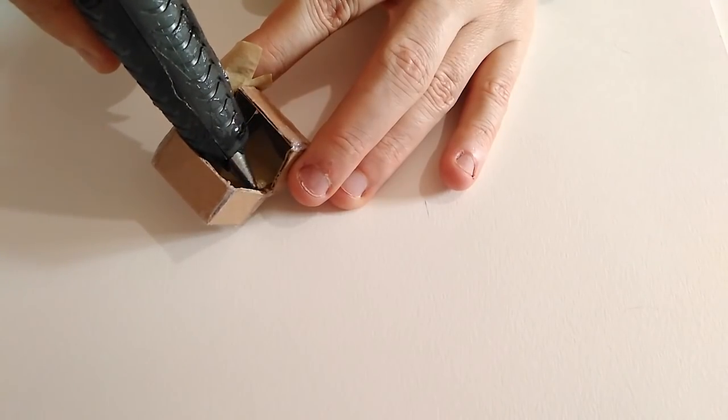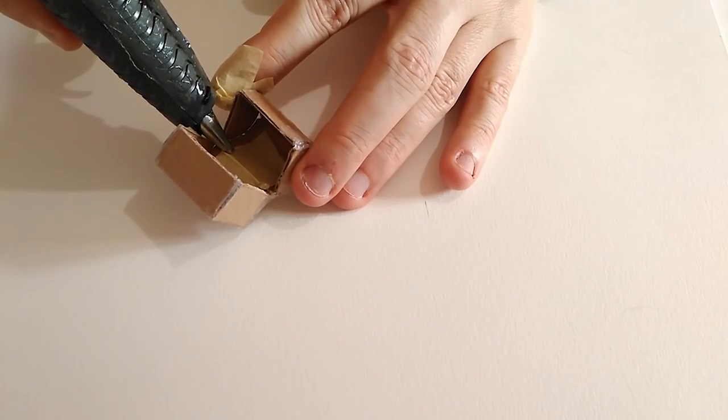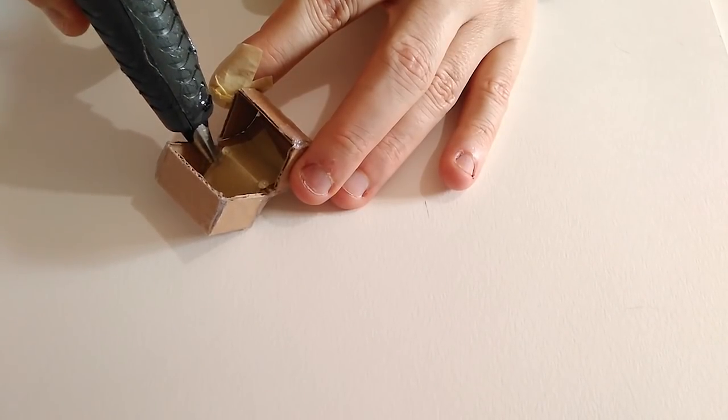To secure the hinge, you can put another piece of tape on the inside and a couple lines of hot glue to prevent tearing.